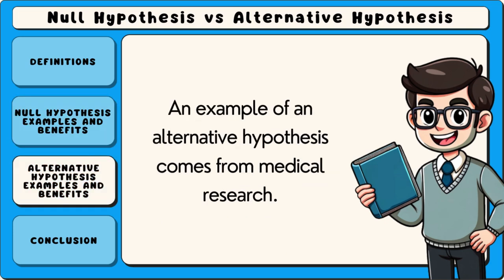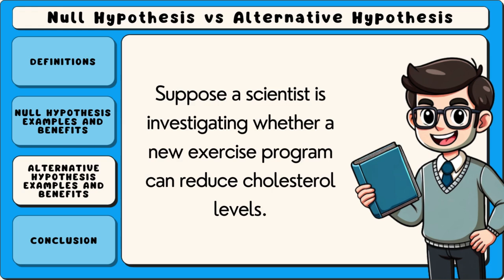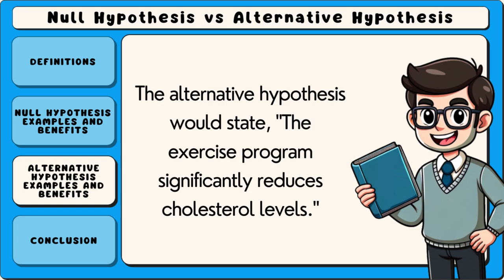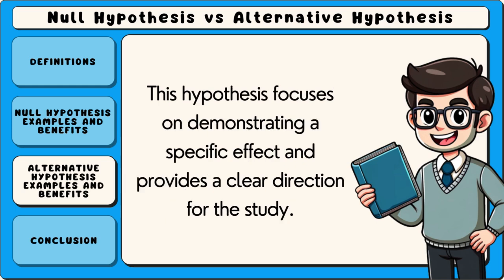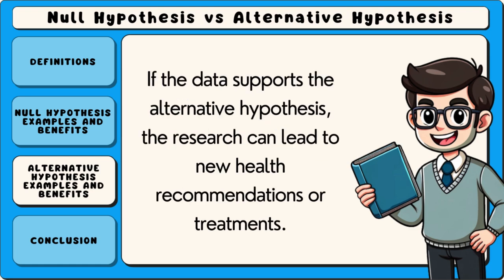An example of an alternative hypothesis comes from medical research. Suppose a scientist is investigating whether a new exercise programme can reduce cholesterol levels. The alternative hypothesis would state that the exercise programme significantly reduces cholesterol levels. This hypothesis focuses on demonstrating a specific effect and provides a clear direction for the study. If the data supports the alternative hypothesis, the research can lead to new health recommendations or treatments.